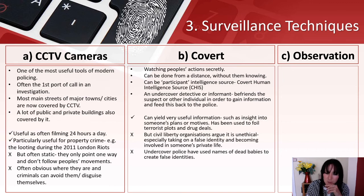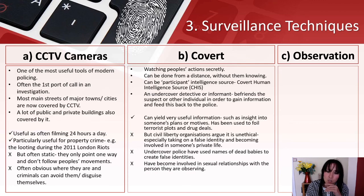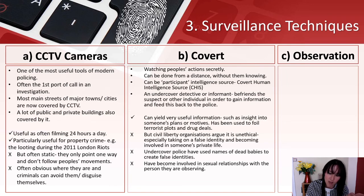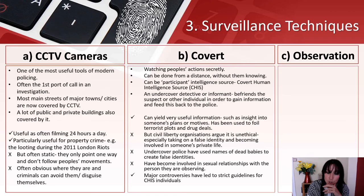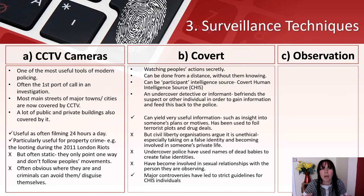Undercover police have used the names of dead babies to create false identities — so they're using real people's details. Some have become involved in sexual relationships with the person they're observing. These major controversies have led to strict guidelines for CHIS individuals, which is actually a strength — because they know how dangerous it is, there are now very strict guidelines governing covert surveillance.